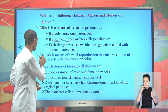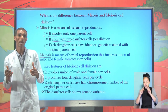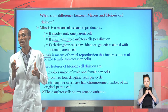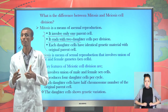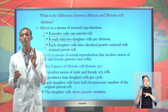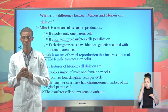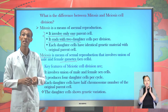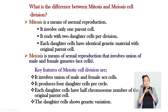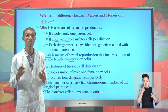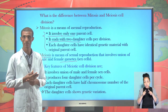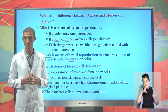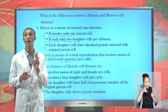Meiosis cell division is a complex and the most important type of reproduction that takes place in living organisms, ensuring continuity of species across generations. The involvement of two parents is mandatory, which means the process takes place through the union of male and female gametes.